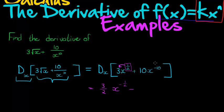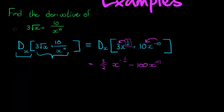Plus, or actually in this case it will be minus because it will be negative 10 times 10 is negative 100x to the power of another 1 subtracted gives me negative 11.